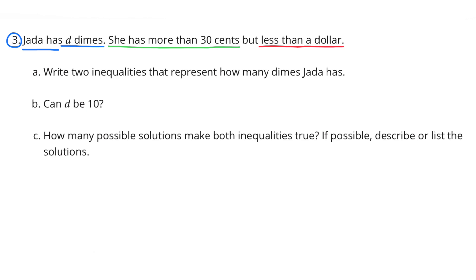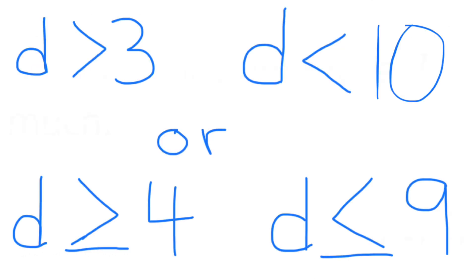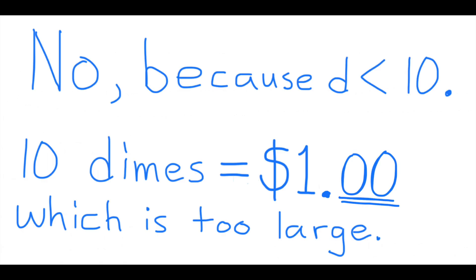Number 3: Jada has D dimes and has more than 30 cents but less than a dollar. Part A: Write two inequalities that represent how many dimes Jada has. You can use either D > 3 and D < 10, or D ≥ 4 and D ≤ 9. Part B: Can D be 10? No, D can't be 10 because D has to be less than 10. 10 dimes equals 1 dollar, and 1 dollar is too large because she has more than 30 cents but less than a dollar.